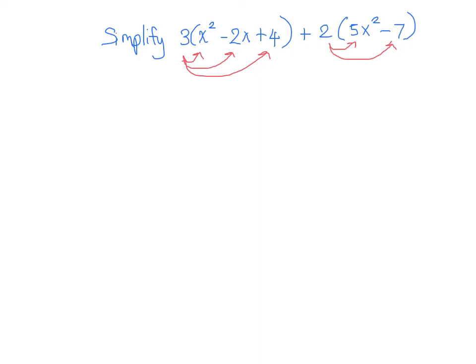So on the left side, we get 3 times x squared is 3x squared minus 3 times 2x gives us 6x, and 3 times 4 gives us 12. Plus 2 times 5x squared gives us 10x squared and 2 times negative 7 gives us minus 14.